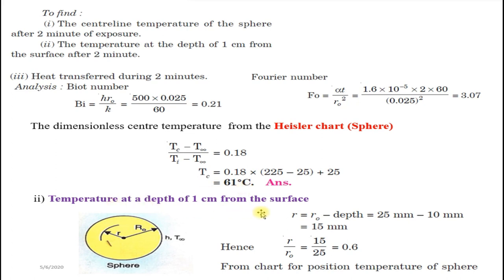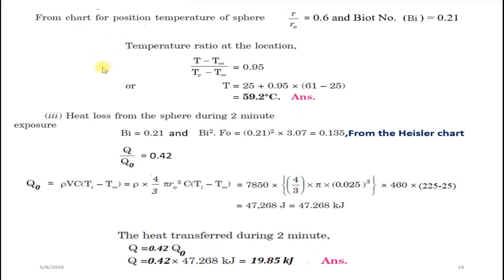To find the temperature at a depth of 1 cm from the surface, we use the second graph and need r/R₀. Here r is measured from the center, but the given depth is from the surface. So r = R₀ − depth = 25 mm − 10 mm = 15 mm. Therefore r/R₀ = 15/25 = 0.6. We also need the Biot number (0.21) for the second graph.